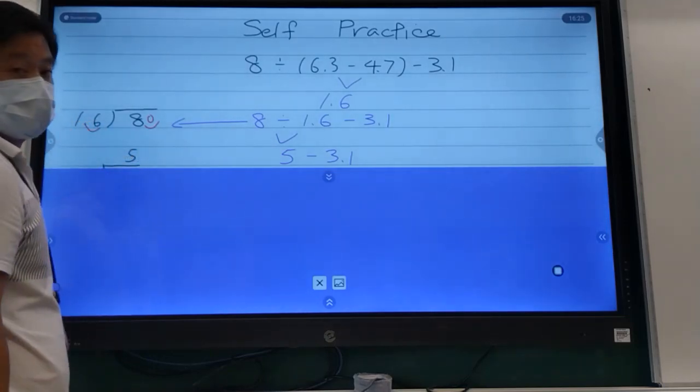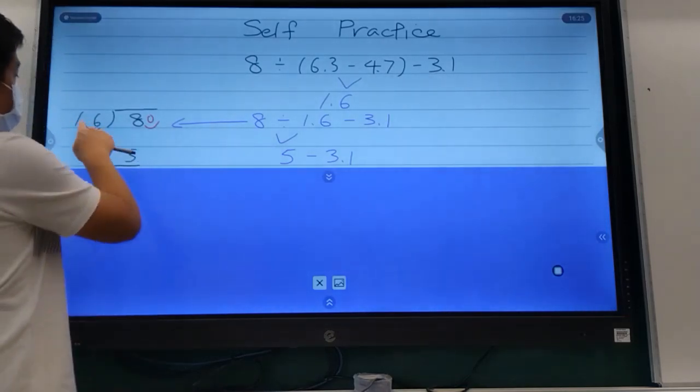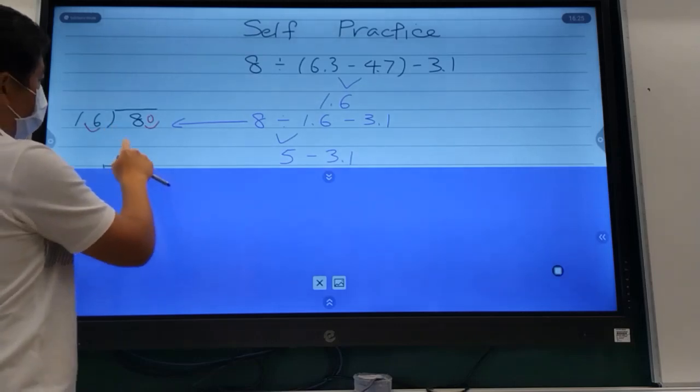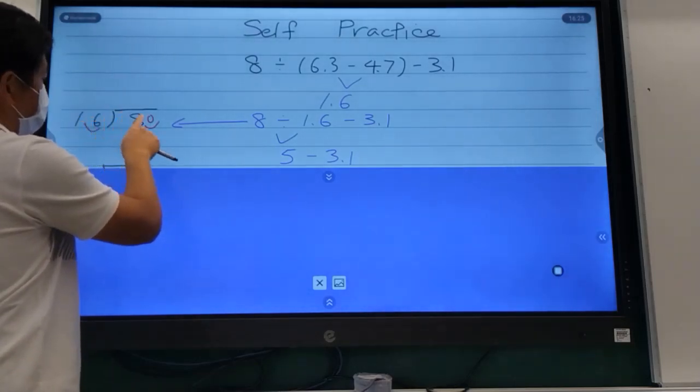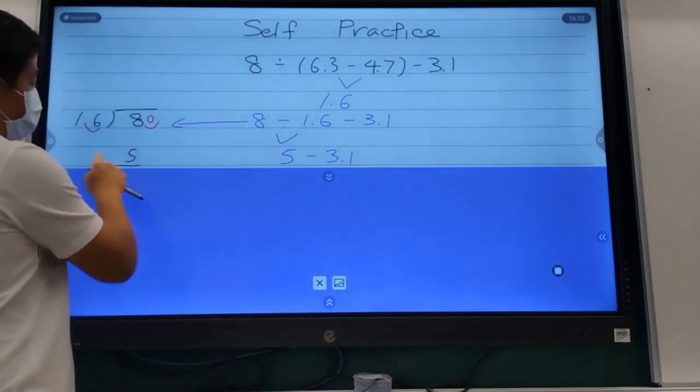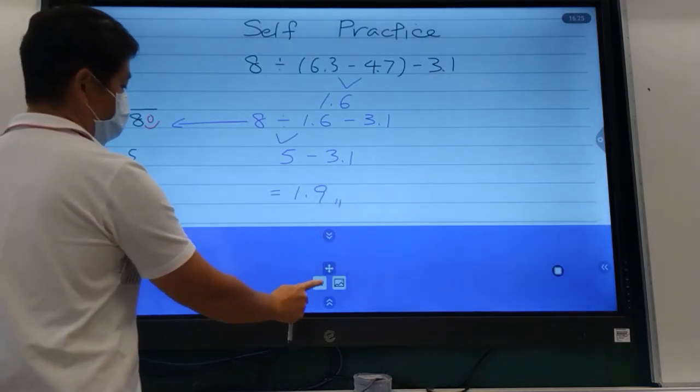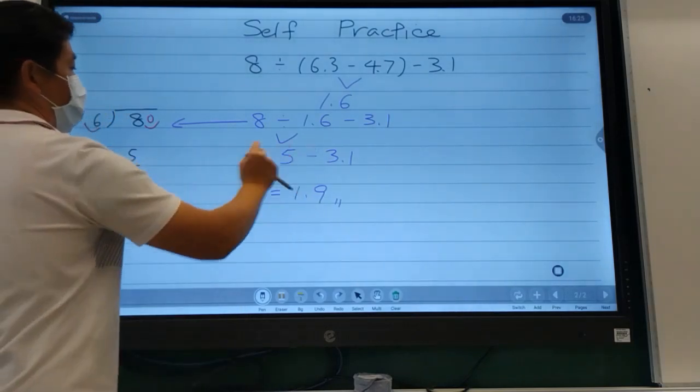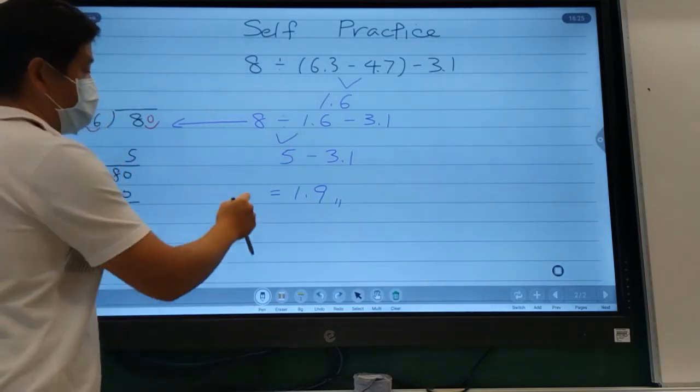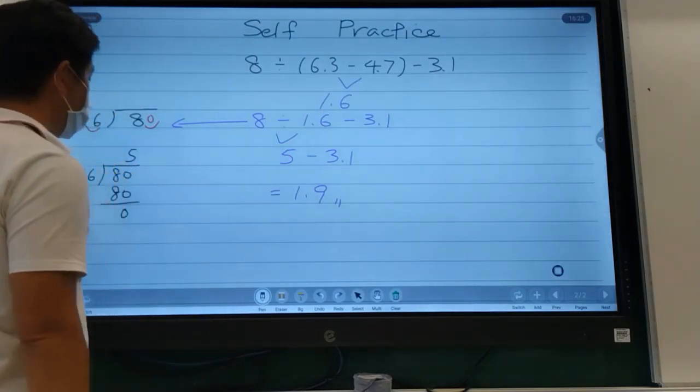When I move it over, 80 divided by 16, the quotient is 5. When you subtract, you should get 5 minus 3.1, and your final answer should be 1.9.